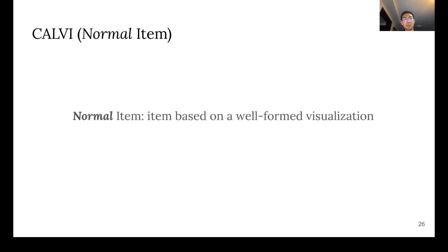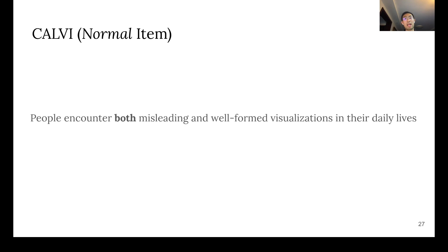On the other hand, normal items are just items based on a well-formed visualization. The argument for having normal items in CALVI is that people encounter both misleading and well-formed visualizations in their daily lives, thus making distinguishing them harder.